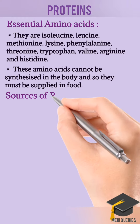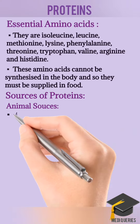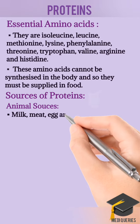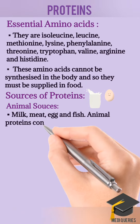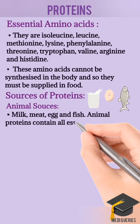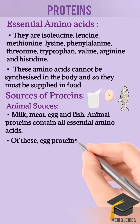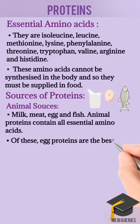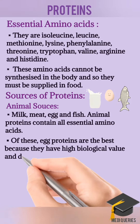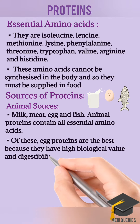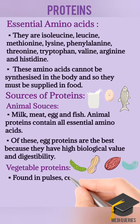Sources of Proteins: The two main dietary sources of proteins are animals and vegetables. Animal Proteins: Milk, Meat, Egg and Fish are important animal sources of proteins. Animal proteins contain all essential amino acids in adequate amounts. Of these, Egg Proteins are the best because they have a high biological value and digestibility.